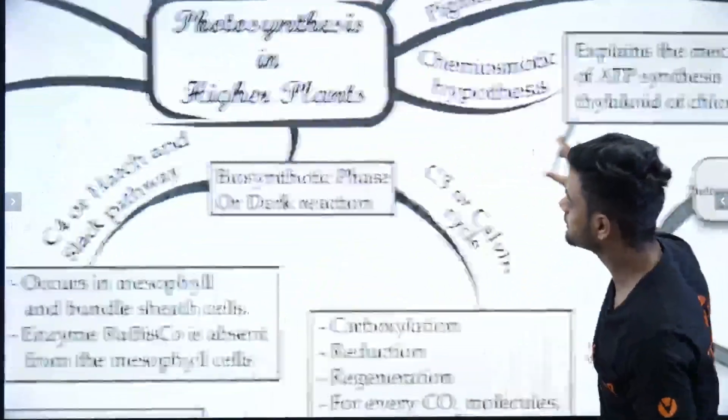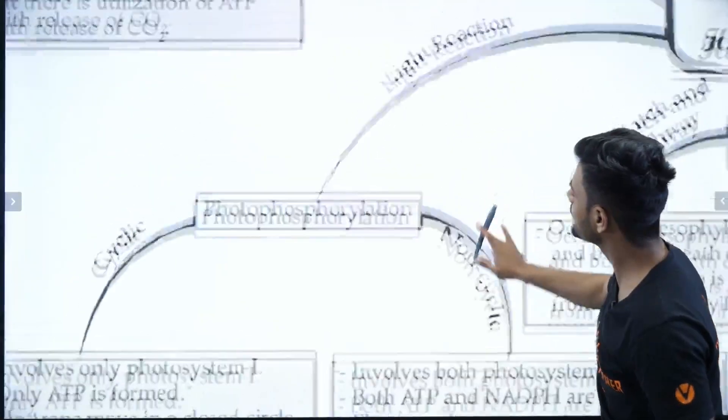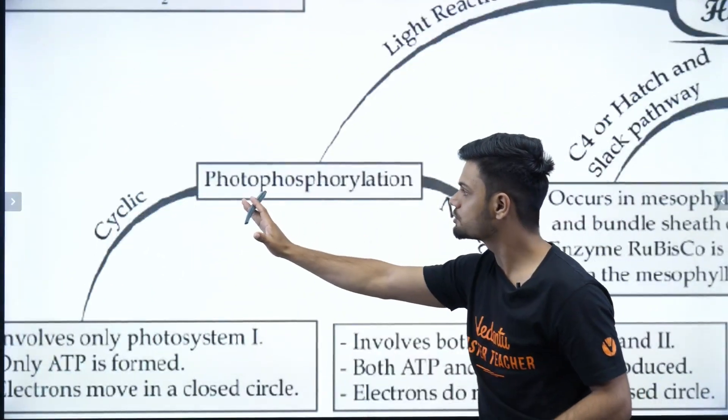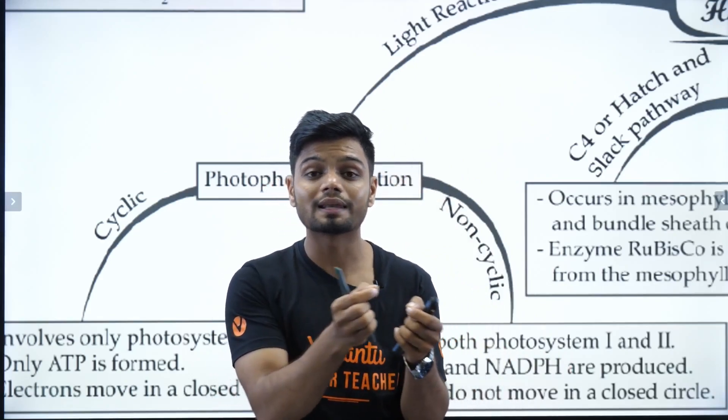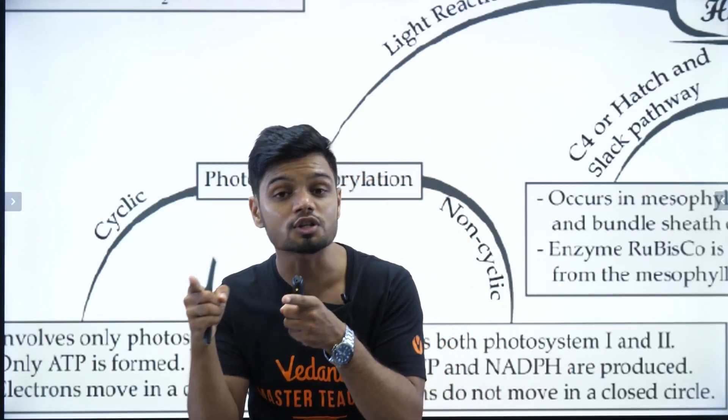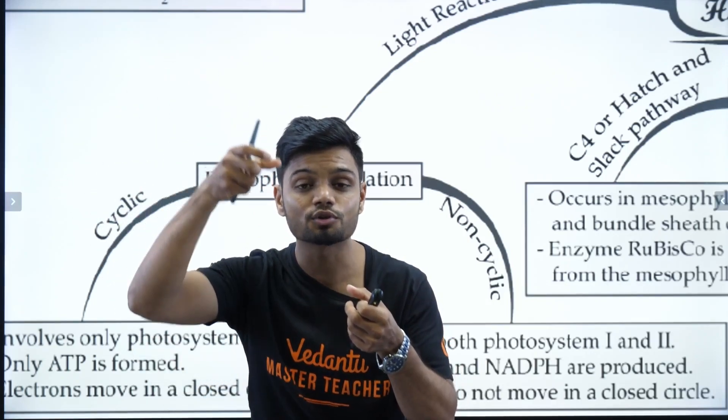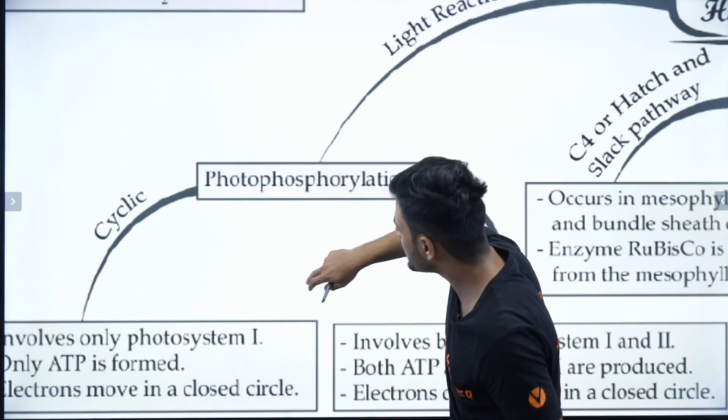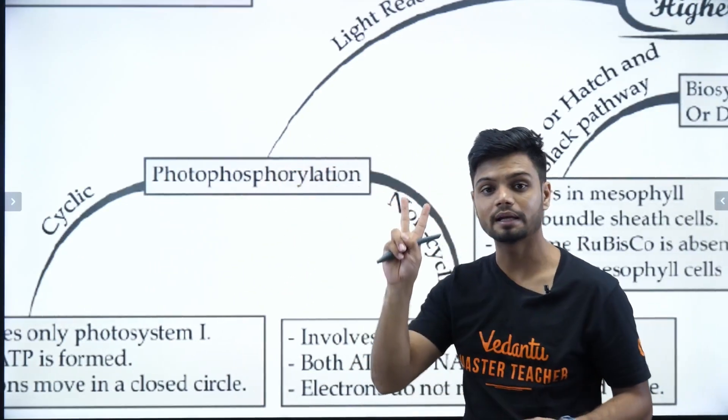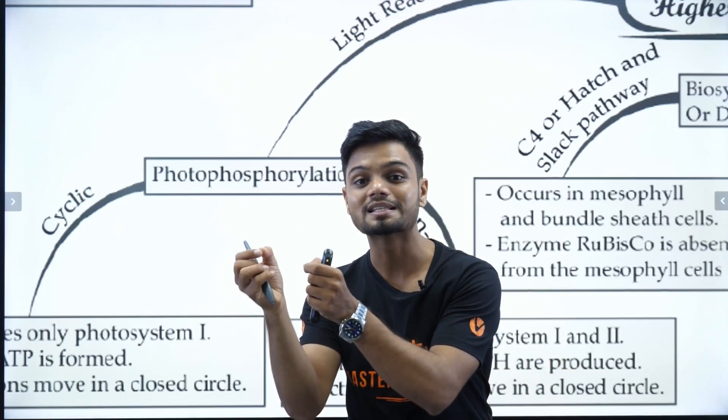Then we have, finally, the reactions. That is light reaction. In light reaction, it's called photophosphorylation. Because there is involvement of light energy here and phosphorylation is happening. What is the meaning of phosphorylation? That is the formation of ATP is happening. That is addition of phosphate. And in light reaction, we have mainly two types. One is called cyclic. Other one is called non-cyclic.